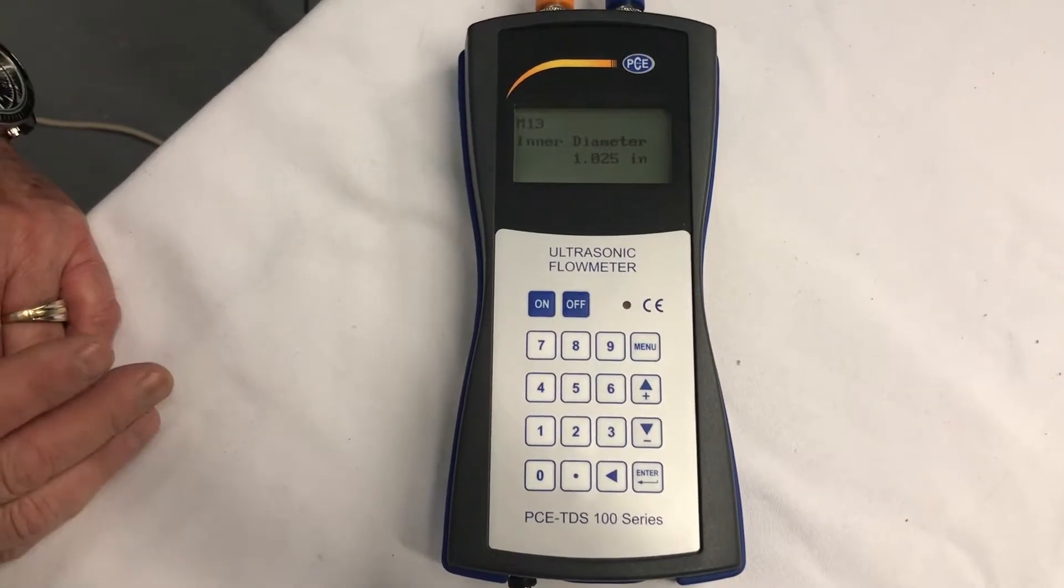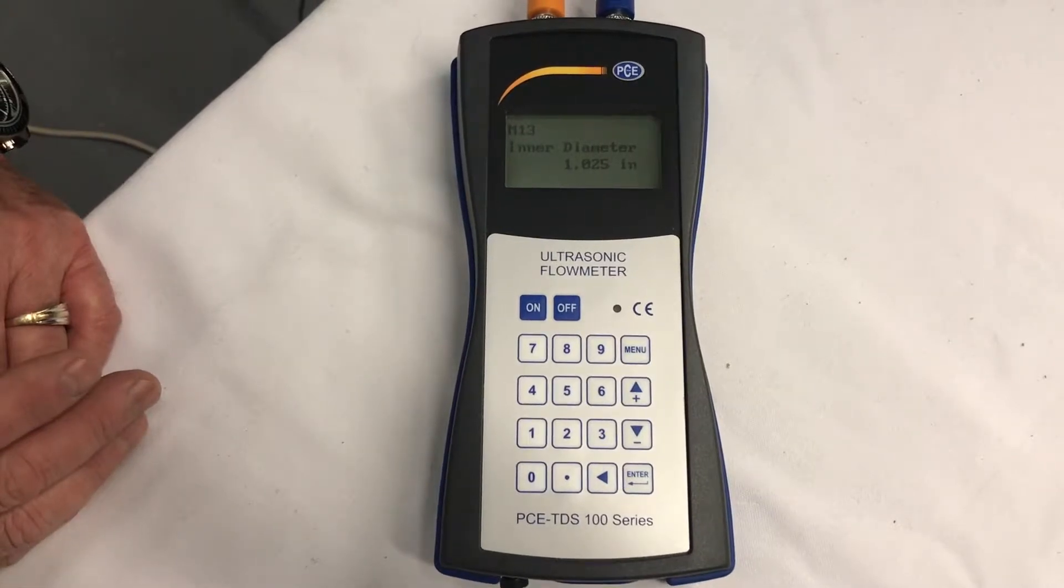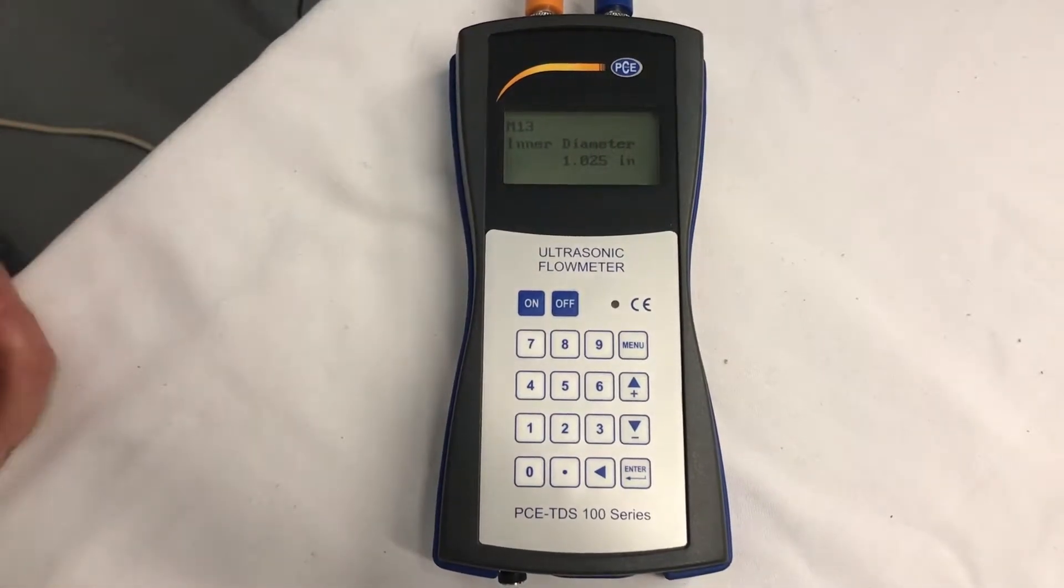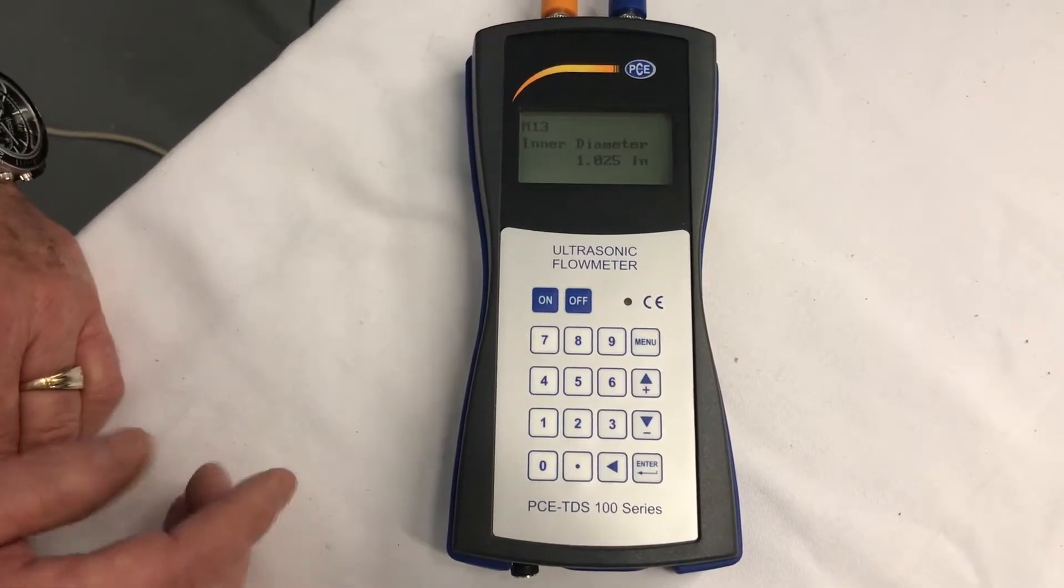Now that we've got our information about our pipe or our tube, copper tubing, into the meter, we're going to go to the next part of selecting what type of material is the pipe.